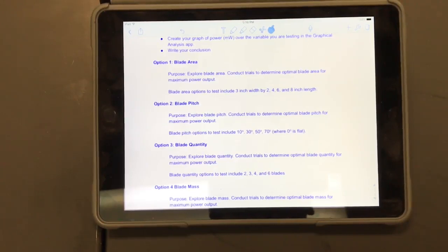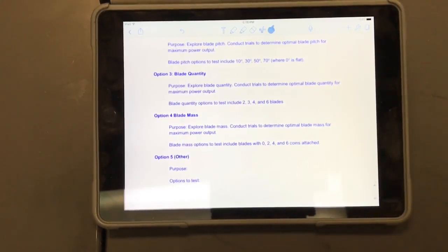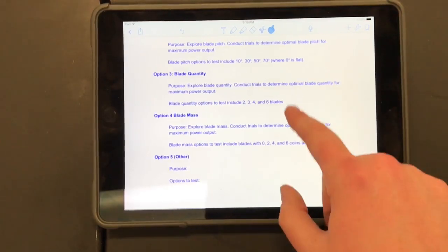So some of the options include blade area, blade pitch, blade quantity, blade mass. I also left an option to choose another experiment. If you have a fun idea that you think you want to try, maybe check with your instructor for that one, but you can definitely do one that's not included in this list.